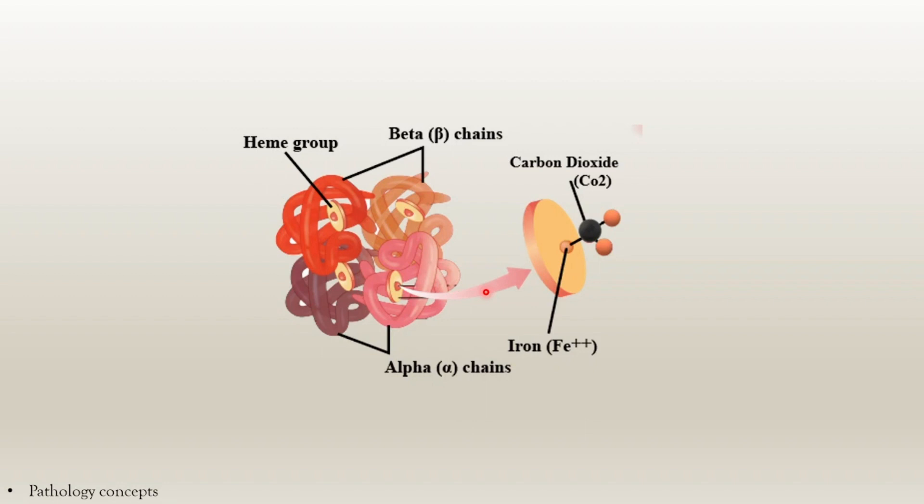The next is carboaminohemoglobin. When CO2 is combined with hemoglobin, it is called carboaminohemoglobin — the main form of hemoglobin seen in venous circulation where blood carries CO2 from tissues to the lungs.